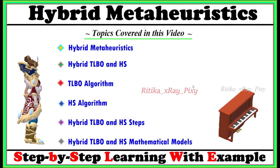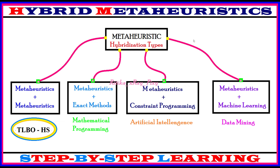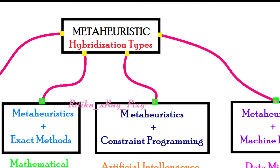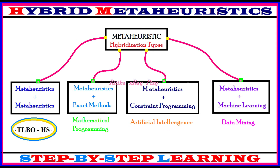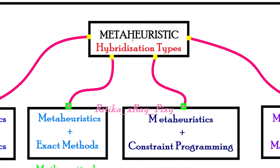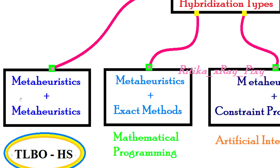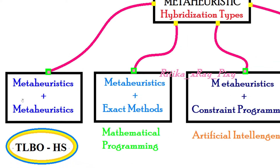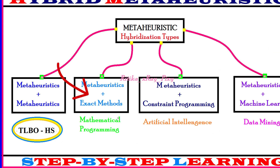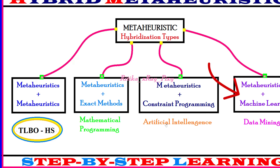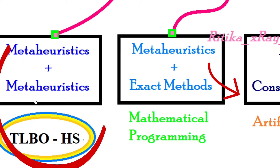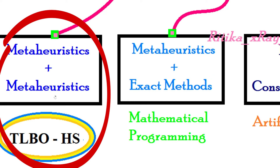Different steps and mathematical models used in the hybrid teaching learning based optimization algorithm. As you can see here, we have different types of hybridization that we can use for meta-heuristics, which we already discussed in the hybrid grasshopper optimization algorithm. Either we can combine meta-heuristics with meta-heuristics, or we can combine meta-heuristics with exact methods or artificial intelligence and machine learning techniques.